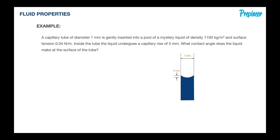All right, let's go ahead and do another one. A capillary tube of diameter 1 millimeter is gently inserted into a pool of a mystery liquid of density 1,100 kilograms per cubic meter and surface tension 0.04 newtons per meter.